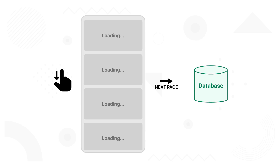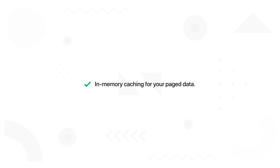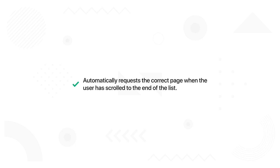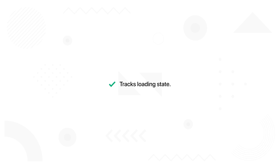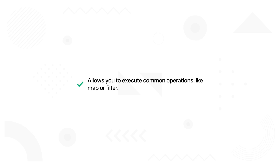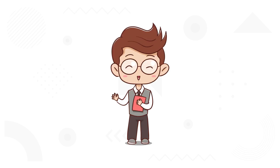The Paging Library includes the following features: in-memory caching for your paged data, which ensures that your application uses system resources efficiently; first-class support for Kotlin Coroutines and Flow as well as LiveData and RxJava; automatically requesting the correct page when the user has scrolled to the end of the list; ensuring that multiple requests are not triggered at the same time; allowing us to cache our data; allowing us to track a loading state; and allowing us to execute common operations like map or filter. Now I am going to introduce you to some of the most important classes that belong to this library.